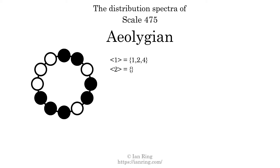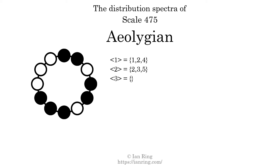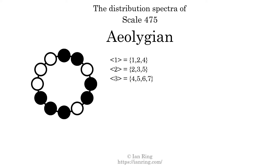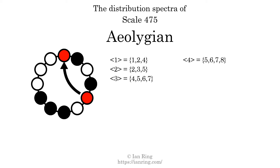The generic interval of two scale steps comes in three different specific interval sizes: two semitones, three semitones, and five semitones. The spectrum width of this generic interval is three. The generic interval of three scale steps comes in four different specific interval sizes: four, five, six, and seven semitones. The spectrum width is three. The generic interval of four scale steps comes in four different specific interval sizes: five, six, seven, and eight semitones. The spectrum width of this generic interval is three.